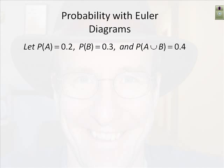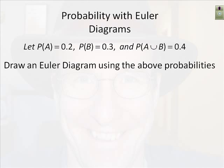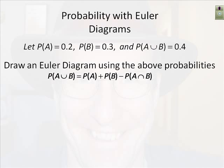Remember that symbol between A and B is the union, and it means OR. So it's the probability of A happening or B happening or both, and A or B is equal to 0.4. An Euler diagram is useful when we want to go beyond just the initial information and answer more complex questions. The key relationship is: the probability of A union B equals the probability of A plus the probability of B minus the probability of A intersect B.